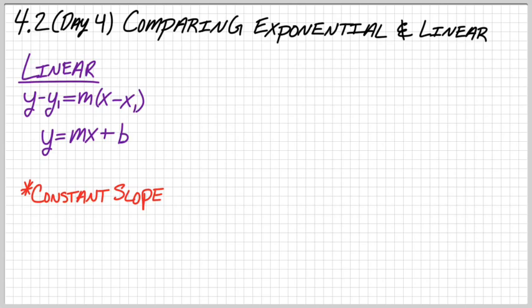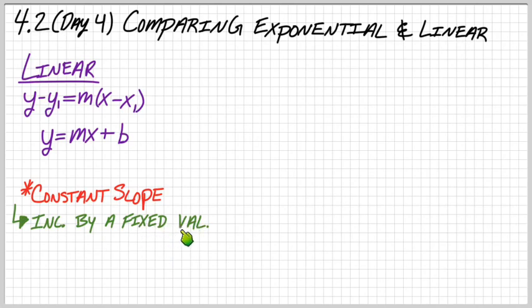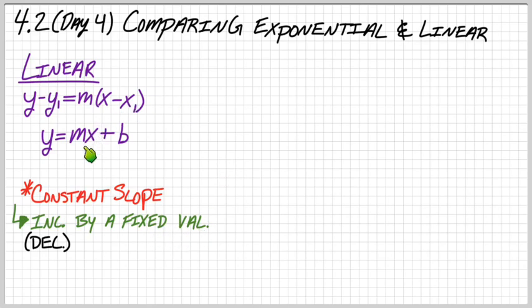In terms of their graph or their values that you can input and output, linear functions are increasing by a fixed value — the same every single time. Or they could be decreasing by a fixed value. What is that fixed value? That would be the rate of change, the slope.